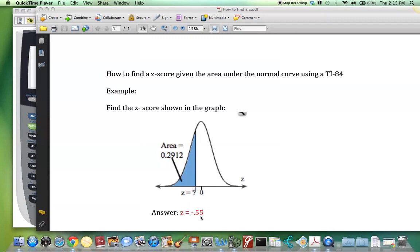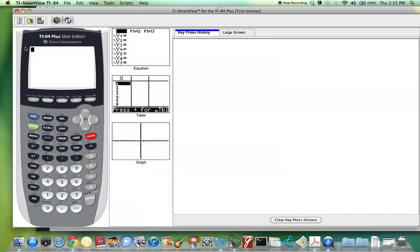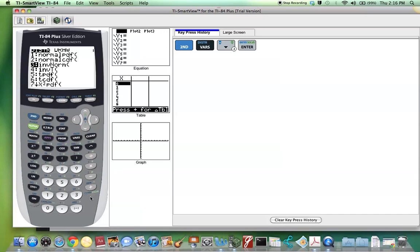Let's see how to get that answer using the TI. We'll select second distribution and scroll down to the function inverse norm. Hit enter.